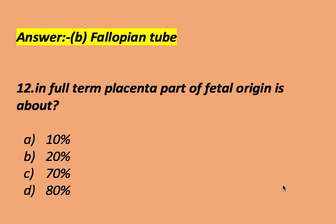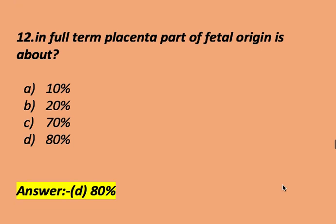In a full-term placenta, the part of fetal origin is about: 10%, 20%, 70%, or 80%. The right answer is 80%. In a full-term placenta, the part of fetal origin is about 80%.